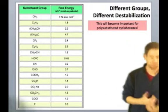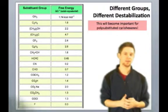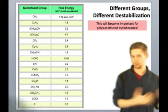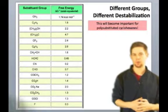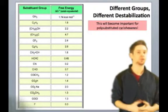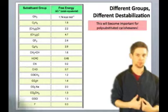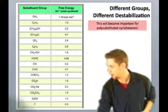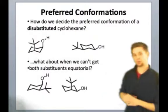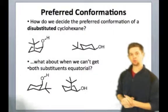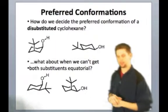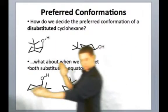So in other words, the energetic penalty we pay for putting the hydroxyl group axial is substantially less. It's only 0.3 kilocalories per mole relative to the much larger 4.7 kilocalories per mole energy we have to pay to put the tert-butyl group axial. And that's why when deciding between these two conformers, we would choose the one that puts the tert-butyl group equatorial as the most stable conformer. So it would be this one right here.